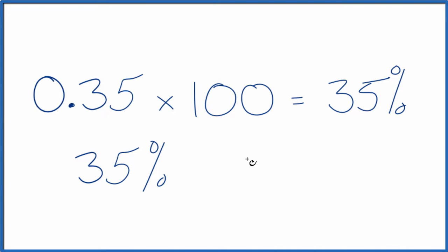Keep in mind that we can write 35 as a fraction. 35 over 100, which equals 0.35, also equals 35 percent.